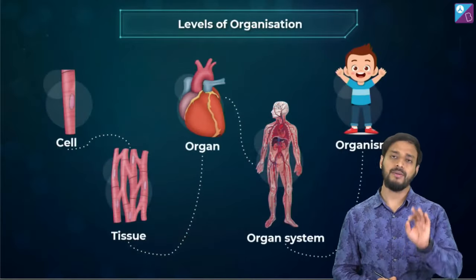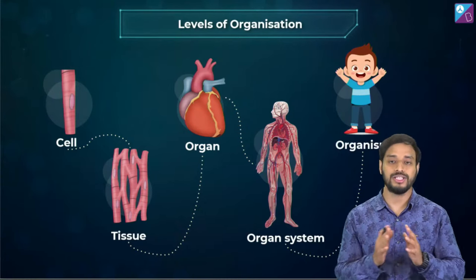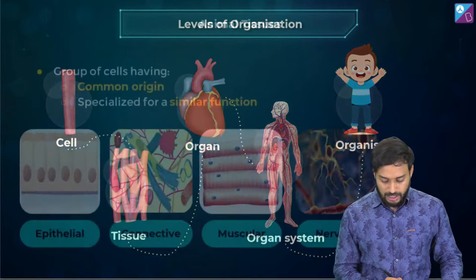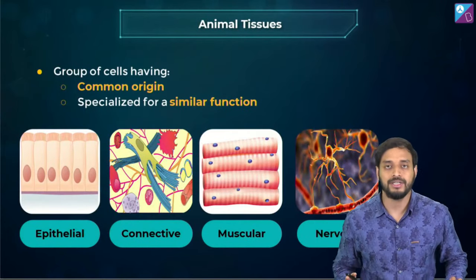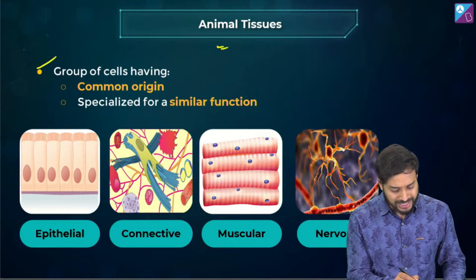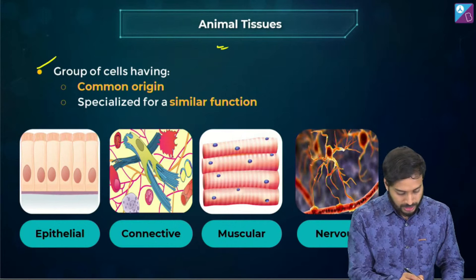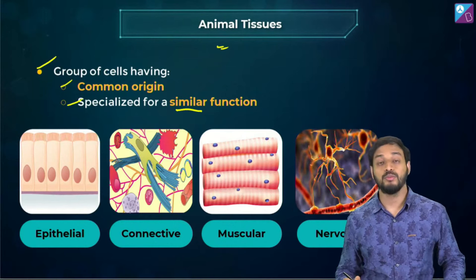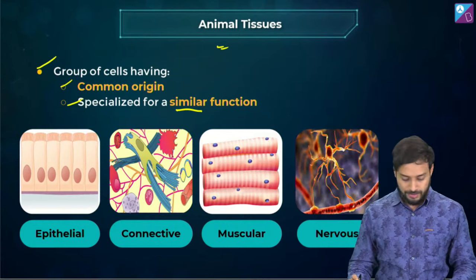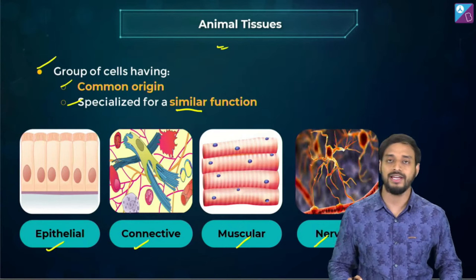Levels of organization — cellular, tissue, organ, organ system, organism — we have discussed this in the animal kingdom. Now let's discuss animal tissues properly. A tissue is a simple group of cells having a common origin, specialized to perform similar functions. The four main types we will study are epithelial, connective, muscular, and nervous tissues.